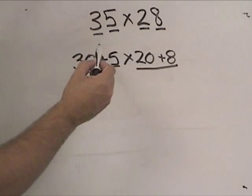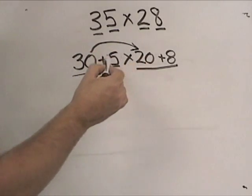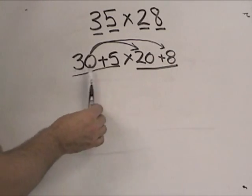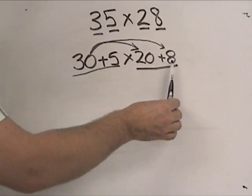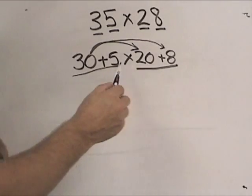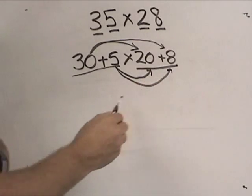When I do this, I like to draw arrows so I keep track of what I have done. So I'm going to take 30 times 20, and I'm going to do 30 times 8. Now I multiply the 30 times both of these numbers over here. So now I need to make sure that I multiply the 5 times both of those numbers over there. So I'm going to do 5 times 20 and 5 times 8.